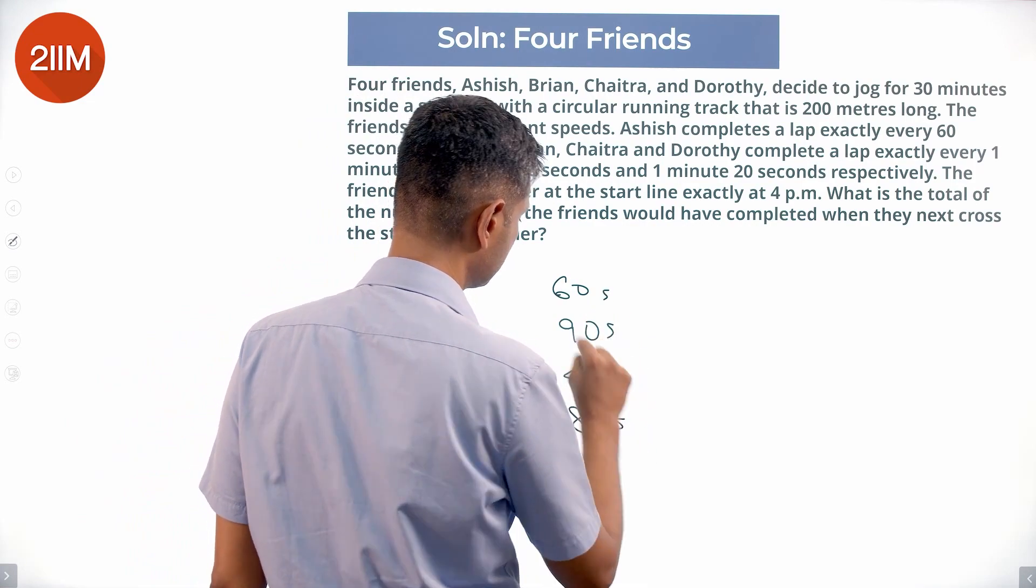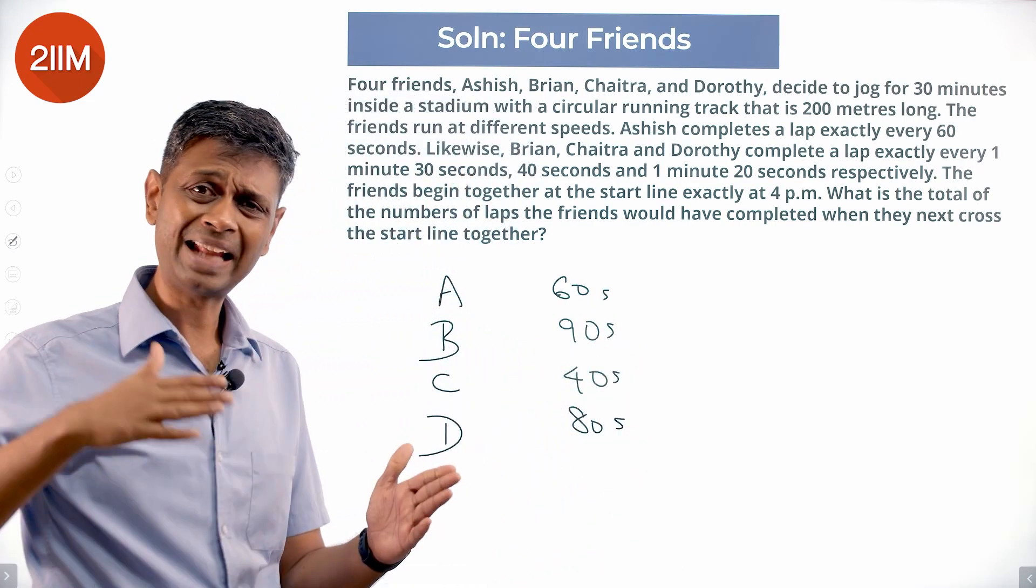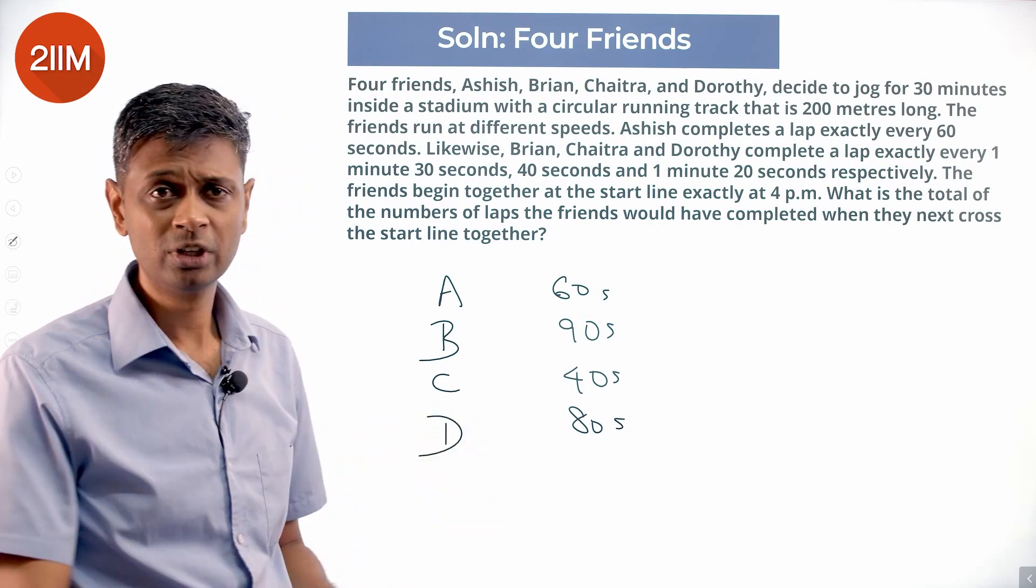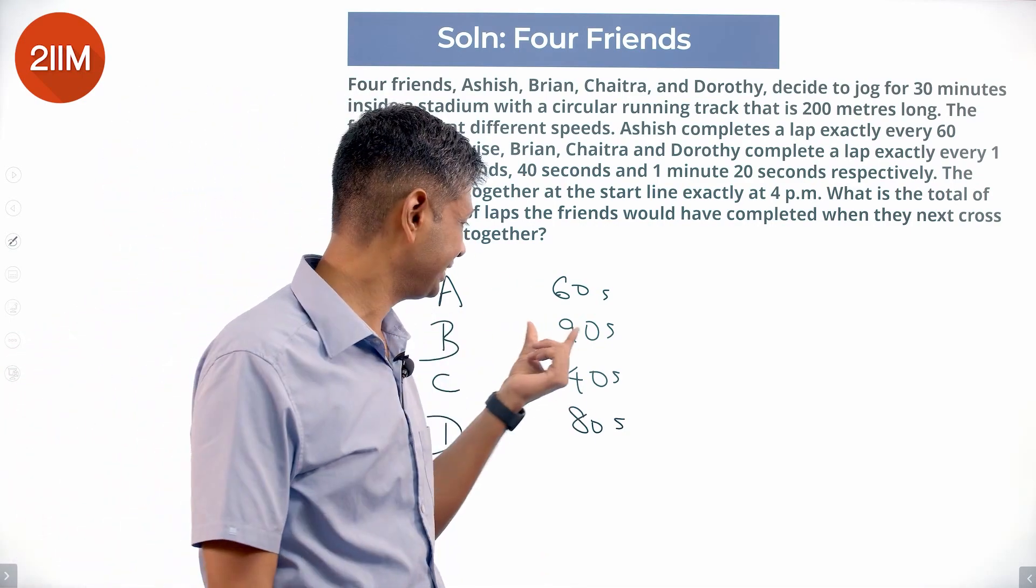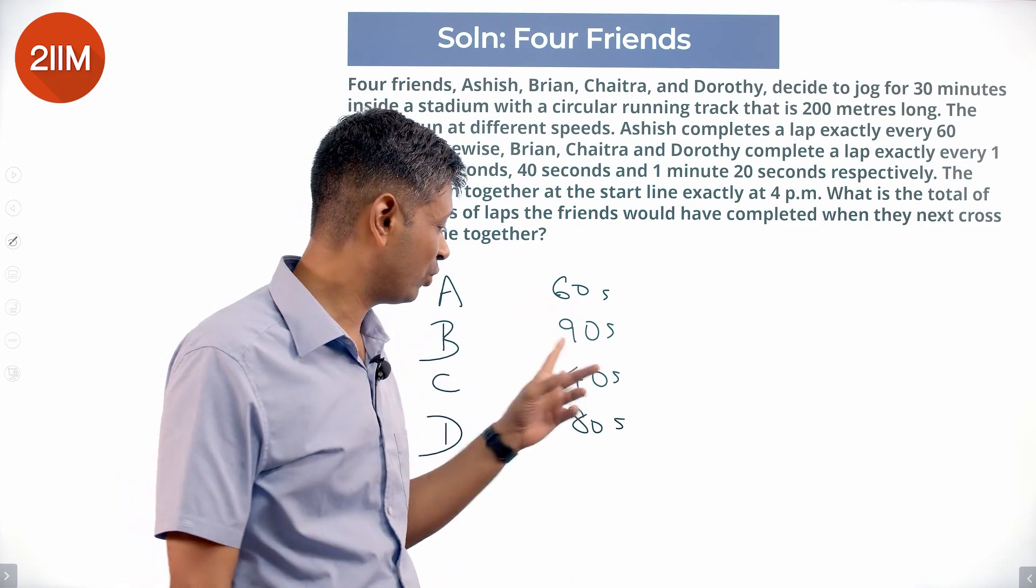So to complete the lap, we want them to meet again at the starting step. So every 60 seconds, A would be at the starting step. Every 90 seconds, B would be at the starting step. Every 40, every 80.